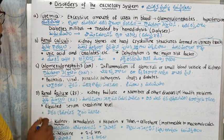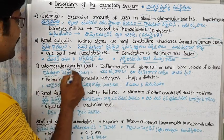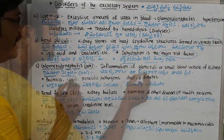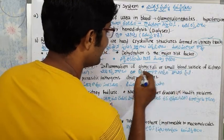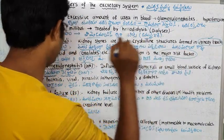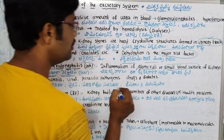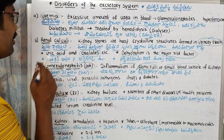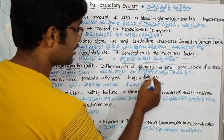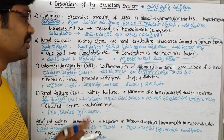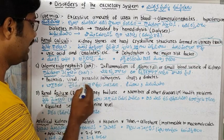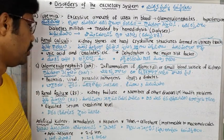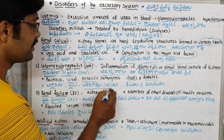The next topic is glomerulonephritis. Glomeruli are small blood vessels of the kidney. Inflammation of these glomeruli — small blood vessels in the kidney — is called glomerulonephritis. It can be caused by bacteria, viruses, parasites, drugs, and diabetes.